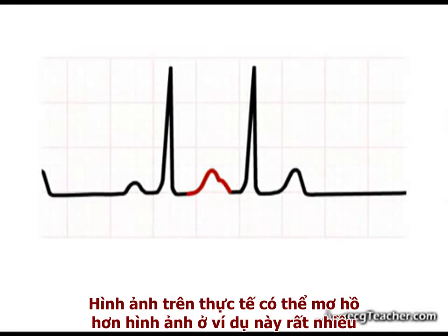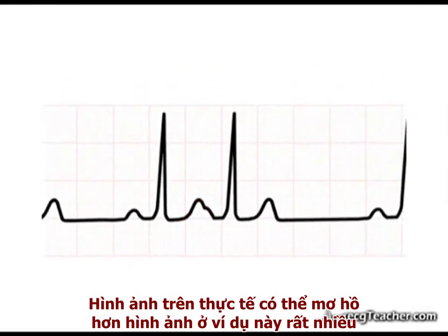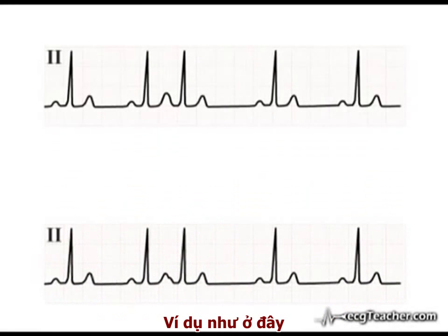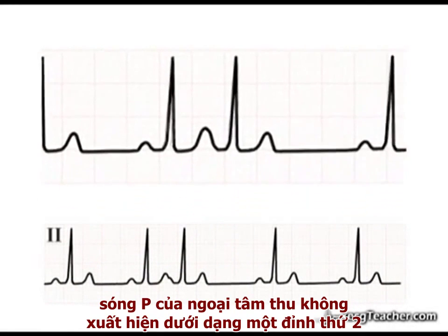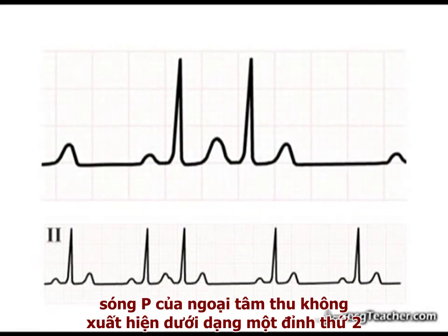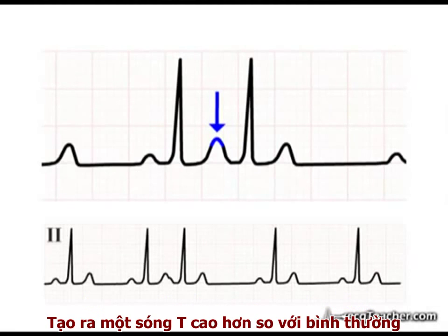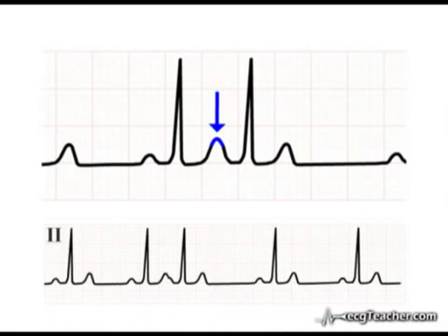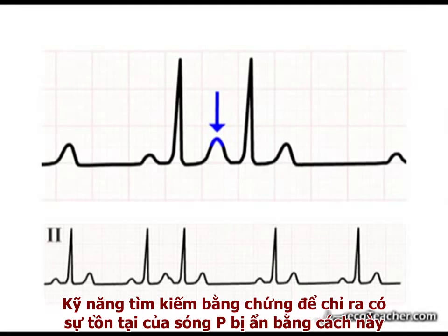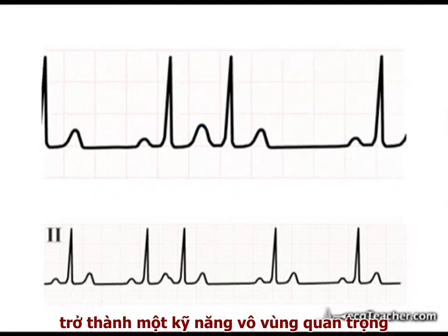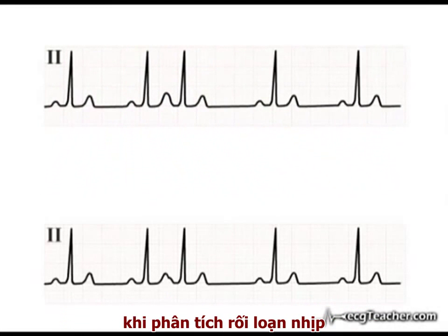The effect can be much more subtle than shown here. In this example, the ectopic P-wave is not visible as a second peak but has merely added to the height of the preceding T-wave deflection, producing a T-wave which is taller than normal. Searching for evidence of hidden P-waves in this way will become a very important skill when analyzing arrhythmias.